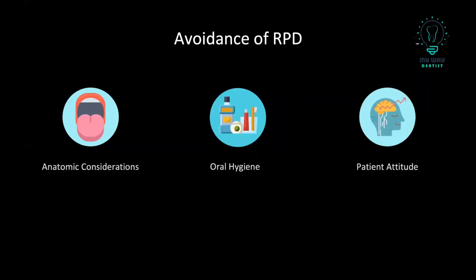Regarding when to avoid the RPD, we summarize it in three points. First, anatomic considerations, such as a large tongue that would push the RPD and cause problems with stabilization — in this case you cannot use the RPD. Second, oral hygiene, which is very important — a patient who cannot maintain oral hygiene cannot receive this treatment unless oral hygiene is achieved. Finally, patient attitude, whether the patient doesn't accept the treatment or will not follow the dentist's instructions.